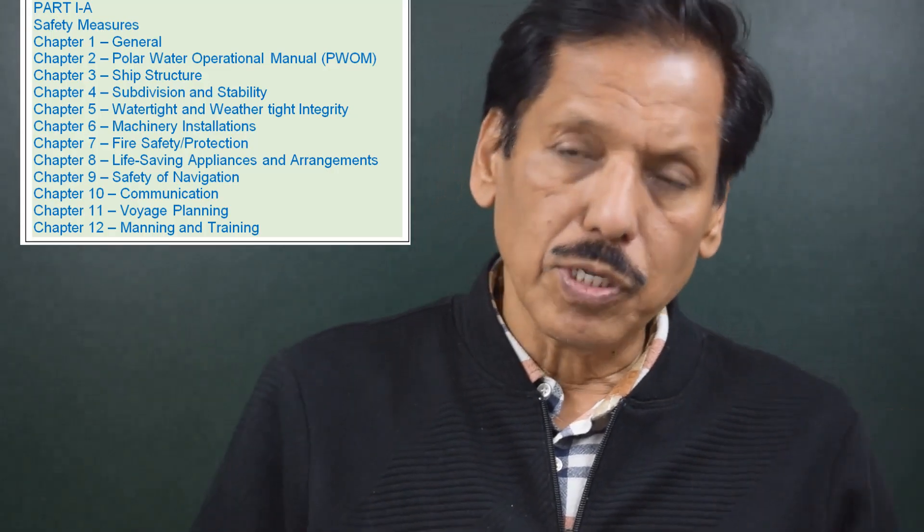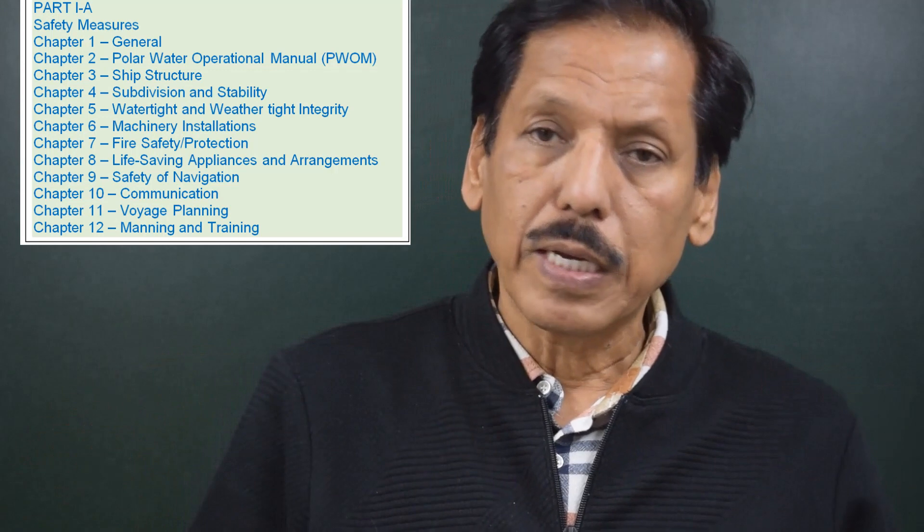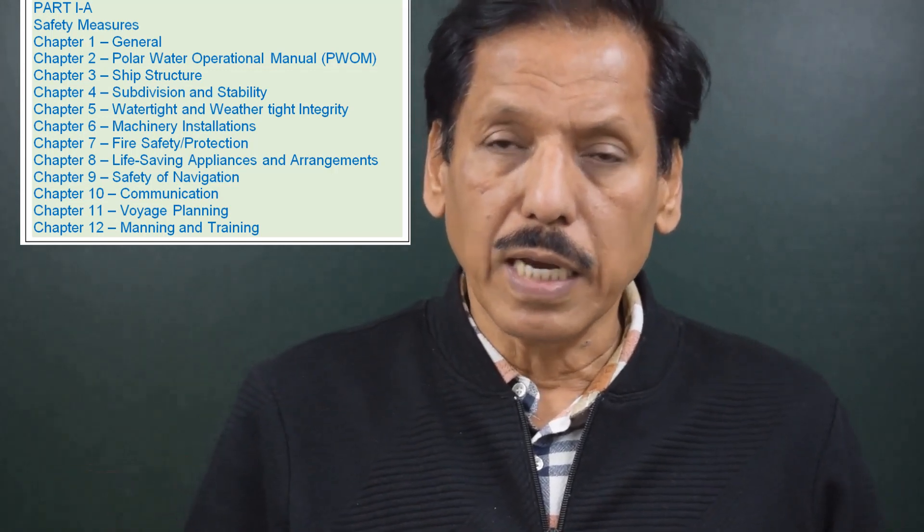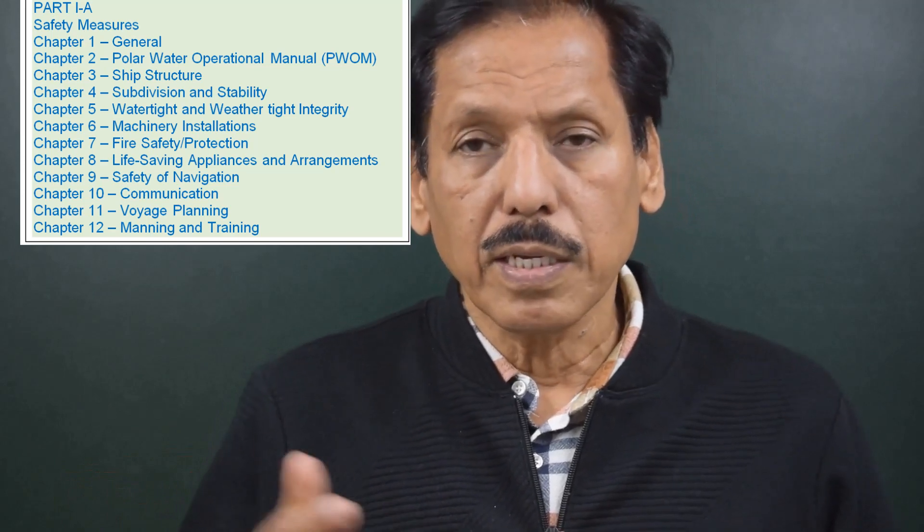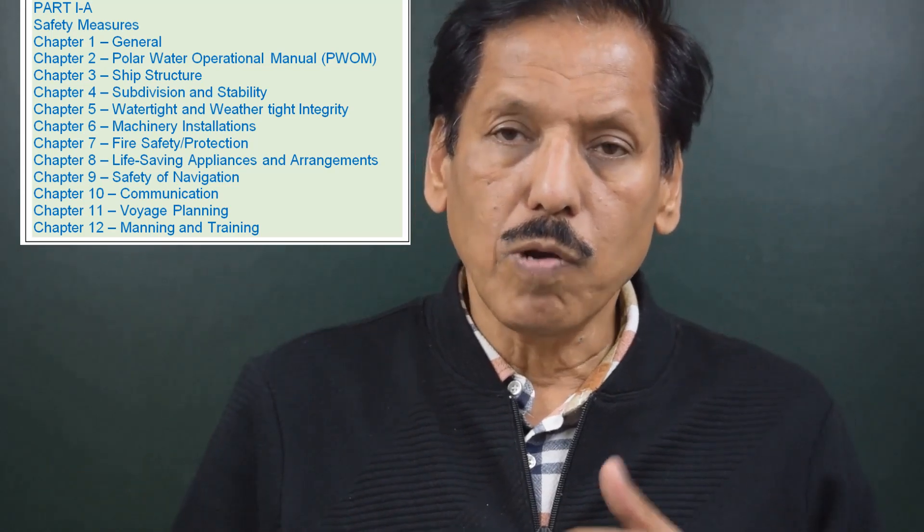The Polar Code can broadly be divided into two parts: mandatory provisions and recommendatory provisions. Under mandatory, Part 1A covers safety issues and Part 2A covers pollution prevention. Parts 1B and 2B are the recommendatory provisions connected to 1A and 2A. Part 1A covers chapters including: general, polar water operating manual, ship structure, subdivision and stability, watertight and weathertight integrity, fire safety measures, machinery construction, life-saving appliances, safety of navigation, communication, manning, training, and voyage planning. Part 2A covers prevention of pollution by oil, noxious substances in bulk and packaged form, sewage, and garbage.